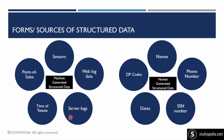Now, structured and unstructured data each have two forms or sources: machine-generated data and human-generated data. Always remember this distinction.